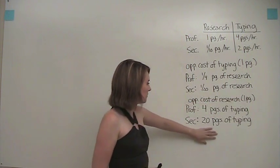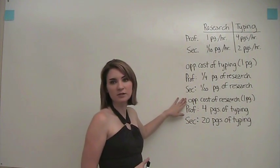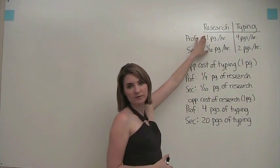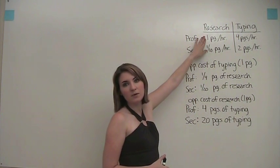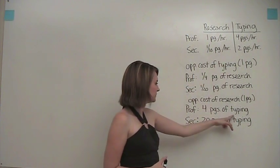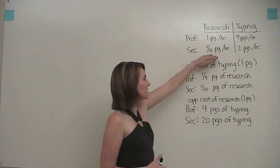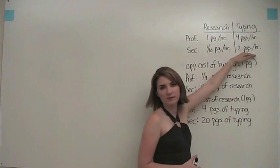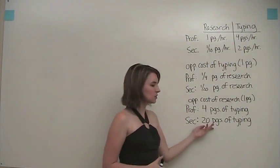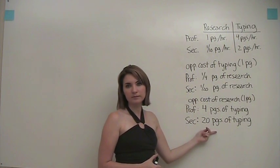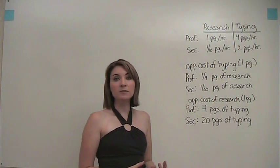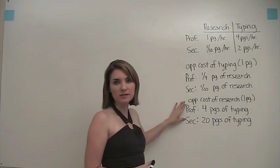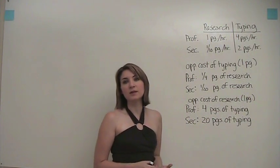We can also think about the opportunity cost of research in terms of how much typing has to be given up. The professor can produce one page of research per hour, so to produce that one page of research he has to give up four pages of typing. The secretary, on the other hand, would take ten hours to produce one page of research. In those ten hours, she could have typed twenty pages — so she has to give up twenty pages of typing to produce one page of research. Therefore, the professor has the comparative advantage in research because he gives up less typing to get a page of research done.